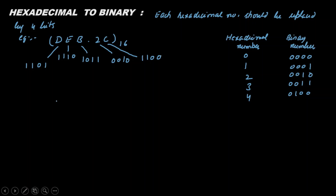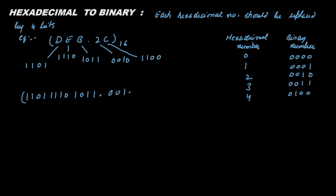This is how you write 4 bits for each hexadecimal digit. Combining them all together: 1101 1110 1101 dot 0010 1100. This is the binary representation of the hexadecimal number DED.2C. This is the final answer.